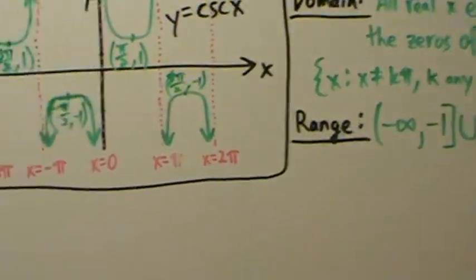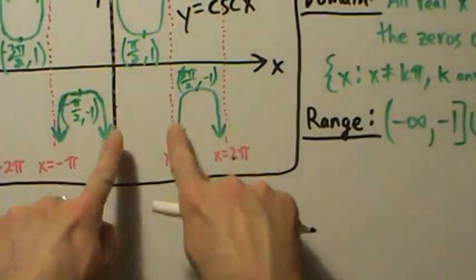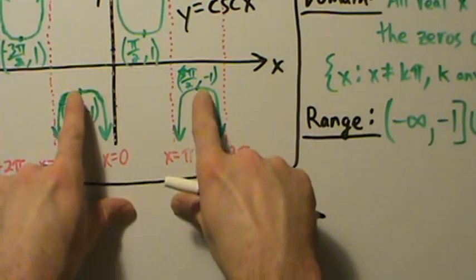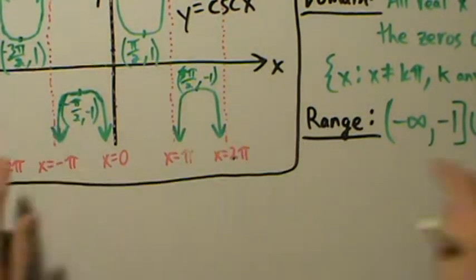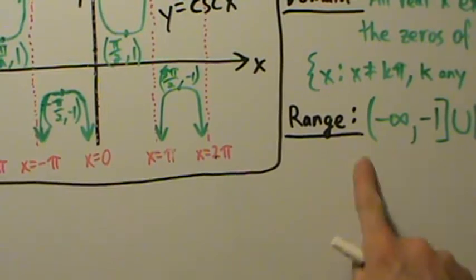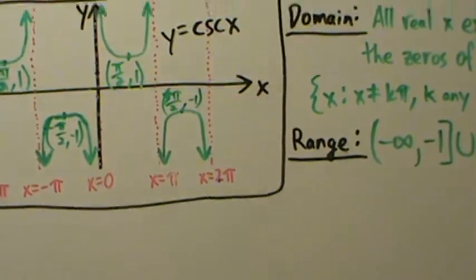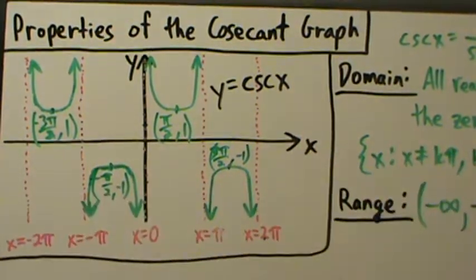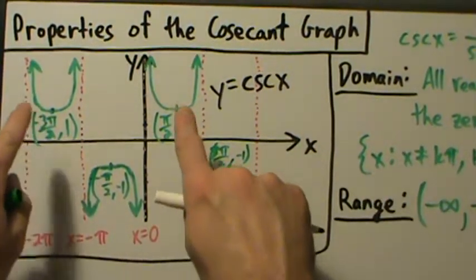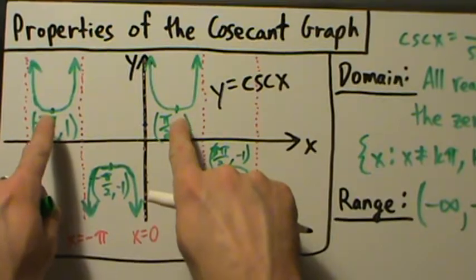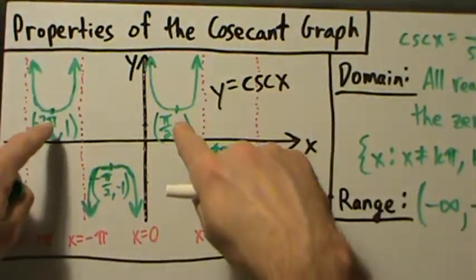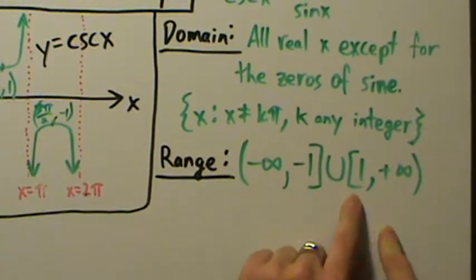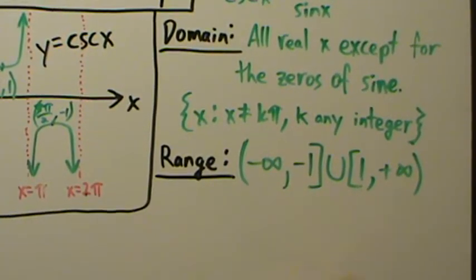Negative infinity to negative 1 covers the pieces going down here — from negative 1 all the way down to negative infinity, including negative 1 itself. That means this piece right here. And then these two pieces going up, plus infinitely many more because of the periodic property. Everything at y equals 1 and above — y equals 1 all the way up to infinity — is also part of the range.